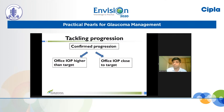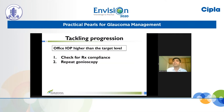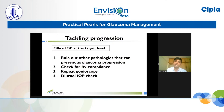Once you confirm that progression is likely to cause visual disability, move to the next steps. First, check whether the office IOPs are higher than the target levels — if so, augmentation of therapy is needed. Before that, check for treatment compliance carefully. Also, always repeat gonioscopy whenever the clinical picture changes, especially in the situation of angle closure in a previously diagnosed open-angle glaucoma eye.